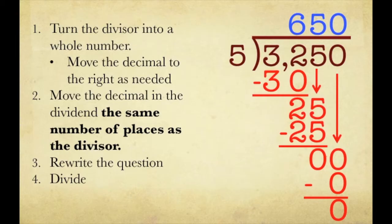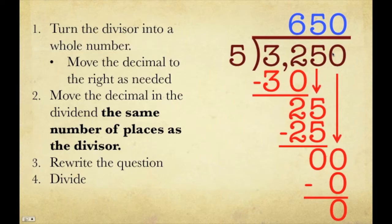One thing I really want to stress — this is a mistake that tons of students make. They see this last column is 0, so they don't work to the last column and just stop, thinking their answer is 65. That is not the case. Whatever the last digit under the house is, you have to make sure you go to that digit. Otherwise, you're not dividing the entire number and you'll get the answer completely wrong.